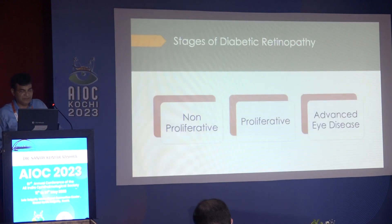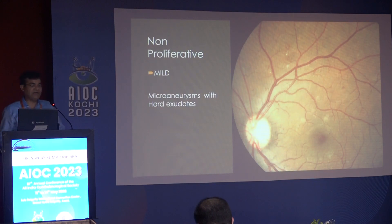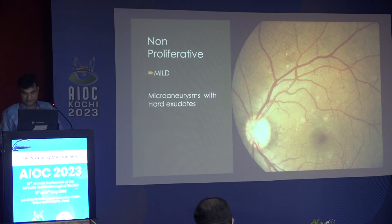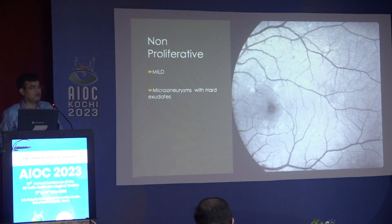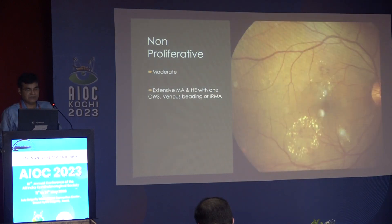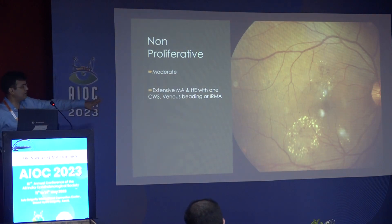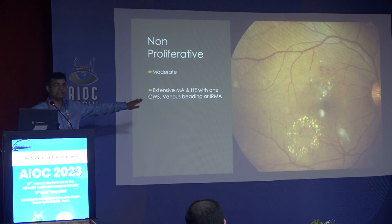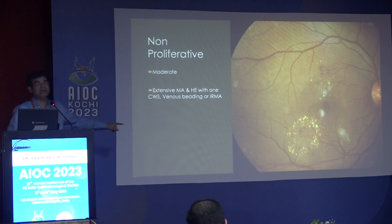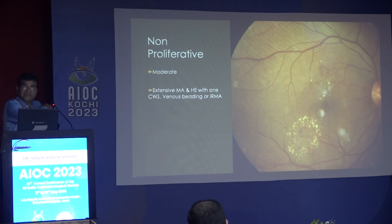Diabetic retinopathy can be divided into three stages: non-proliferative, proliferative, and advanced eye disease. Non-proliferative is further divided into mild, moderate, severe, and very severe. Mild will have microaneurysms with hard exudate. On angiography you can see microaneurysms as hyper-fluorescent dots. The moderate form will have more extensive microaneurysms and hemorrhages with cotton wool spots and venous beading. In a circinate retinopathy pattern, you will invariably find a leaking microaneurysm causing it — so a focal laser on the leaking microaneurysm can resolve these circinate retinopathies.